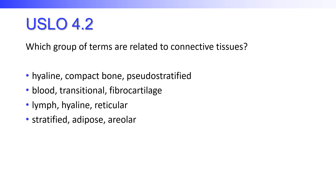Which group of terms is related to connective tissues? The first set — hyaline, compact bone, and pseudostratified — is ruled out because pseudostratified refers to epithelial cells, not connective tissue. The second set — blood, transitional, fibrocartilage — is ruled out because transitional epithelium lines the urinary bladder. So it's not the second one either.